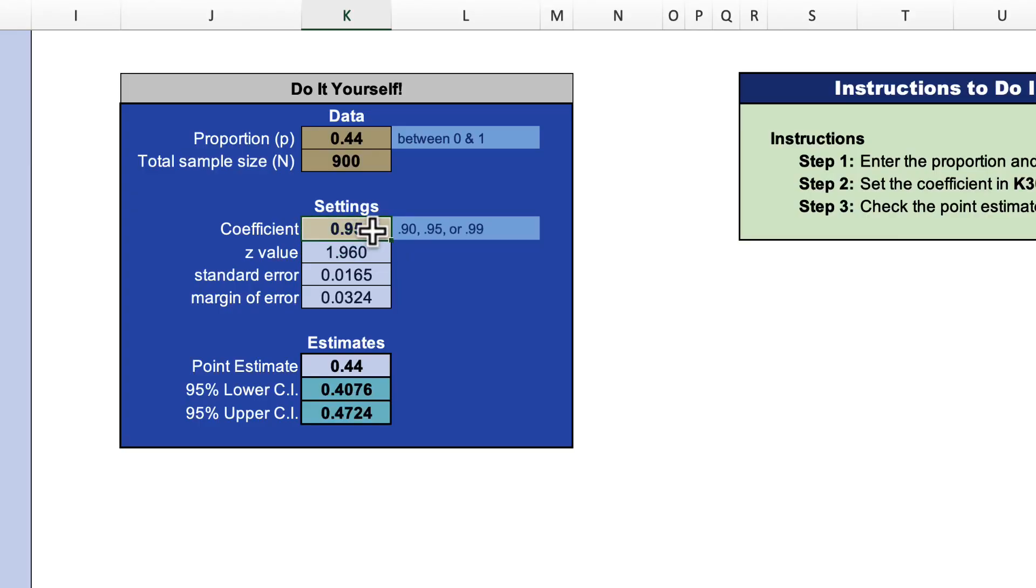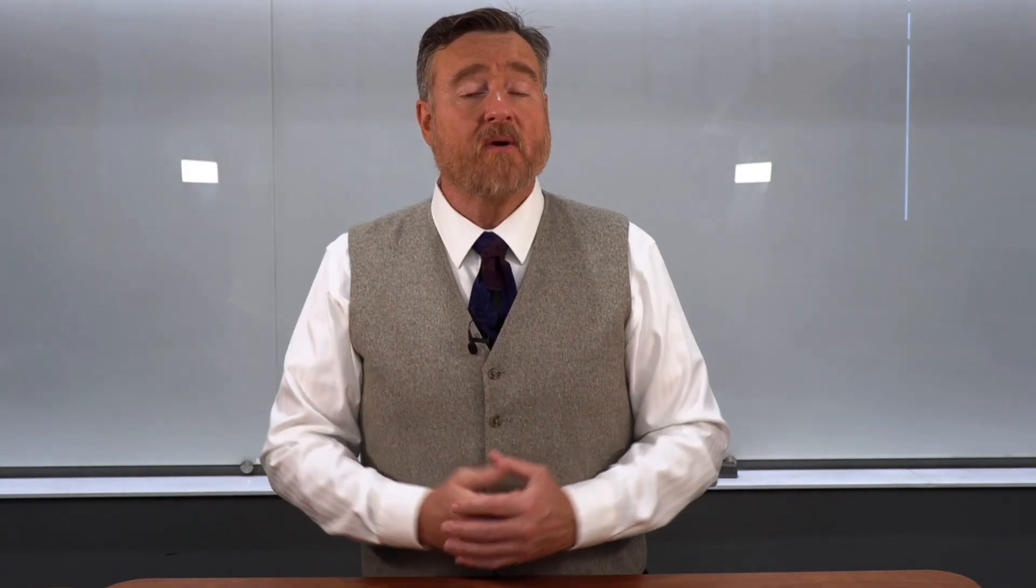Now try it yourself with these settings. Calculate a 99% confidence interval. Is that wider or narrower than the 95% confidence interval? Calculate a 95% confidence interval with a sample size of 90. Is that wider or narrower than a sample size of 900 and a setting of 95%? How is your margin of error affected by increasing your sample size? And once you've worked this out on your own, here are the correct answers.